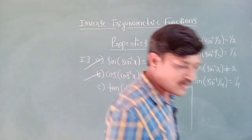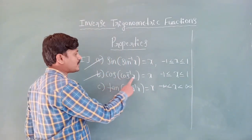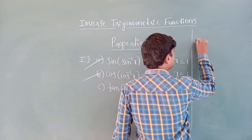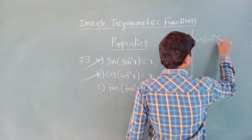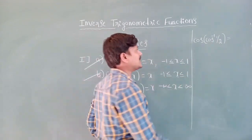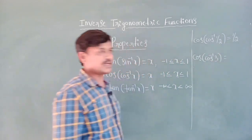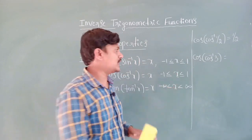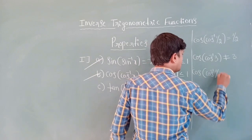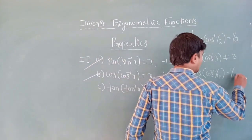Consider cos(cos⁻¹ x) = x, only when x is between minus one and one. cos(cos⁻¹ 1/2): 1/2 lies between minus one and one, so directly answer is 1/2. cos(cos⁻¹ 3): 3 does not lie between minus one and one, so it is not equal to 3. cos(cos⁻¹ 1/4): 1/4 lies between minus one and one, so directly answer is 1/4.